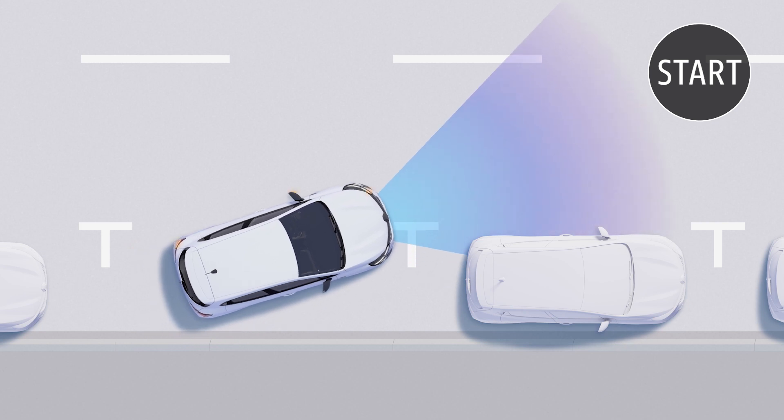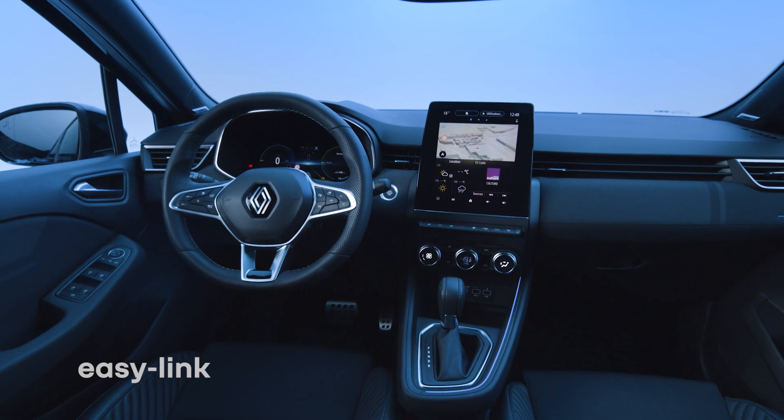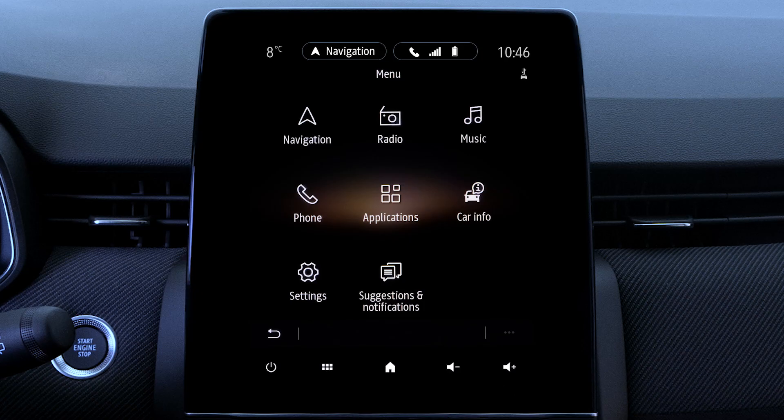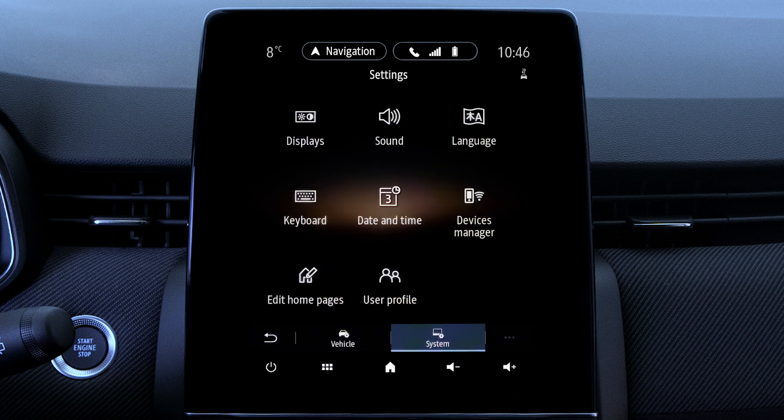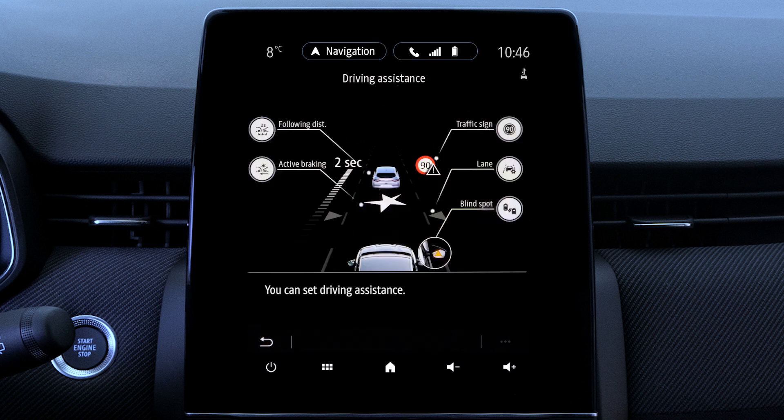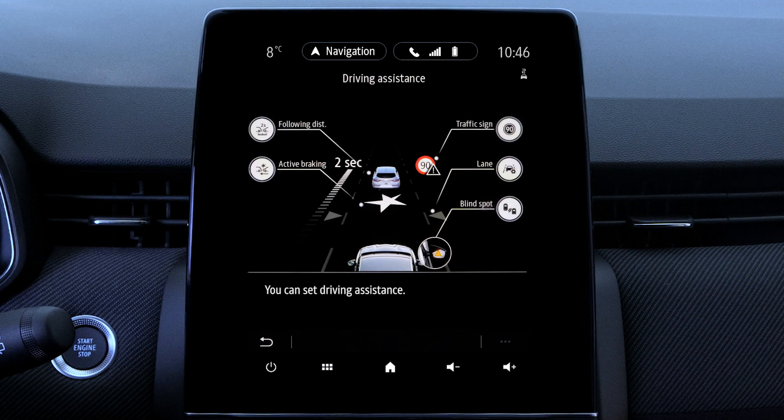Should you wish to deactivate the system, however, go to the Easy Link screen, select Settings, Vehicle, Driving Assistance, Active Braking, and lastly toggle to Off.